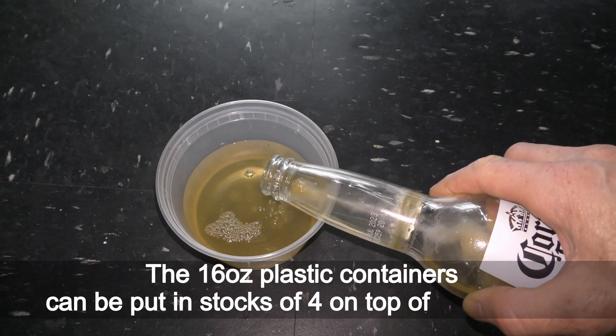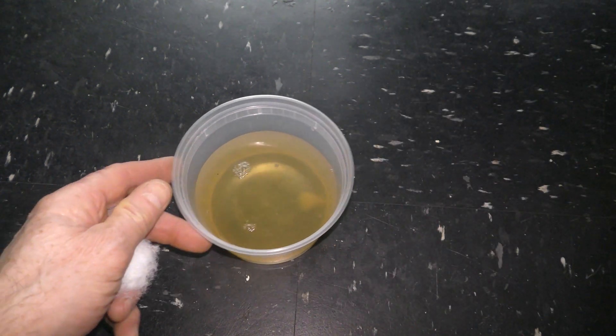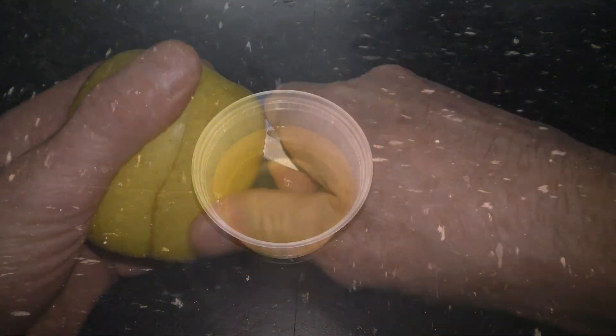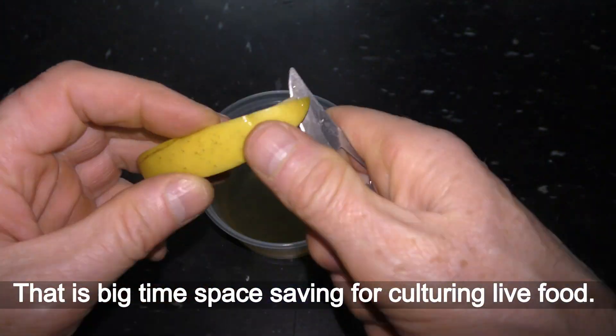The 16 oz plastic containers can be put in stacks of four on top of each other. That is big time space saving for culturing live food.